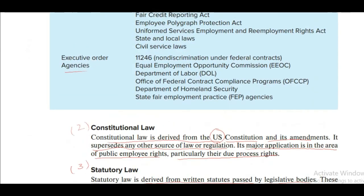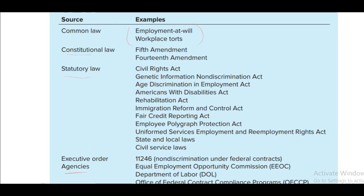So in summary, the four sources of law are: common law, constitutional law, statutory law, and executive order agencies. You can see these staffing laws and regulations when we tried to understand the sources of law in this lecture. If you have any questions, you can ask in the comment section and we would love to answer them. Thank you for watching this lecture — have a nice time, Allah Hafiz.